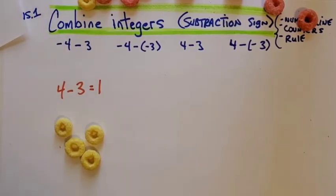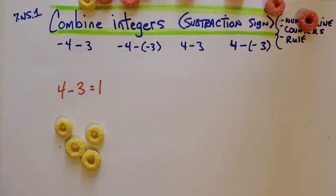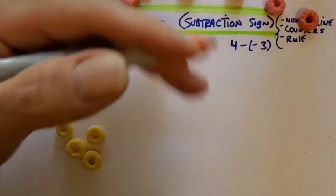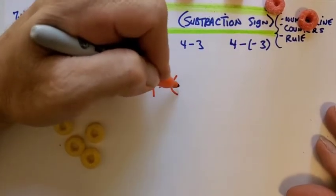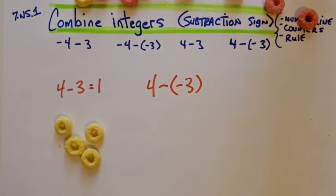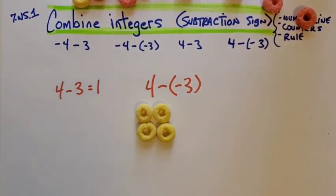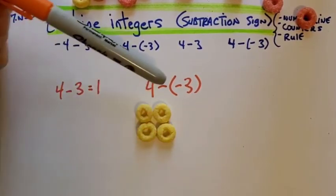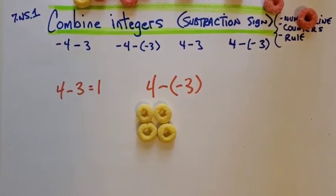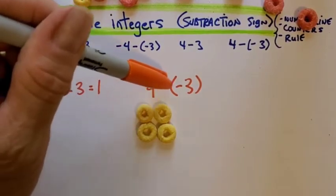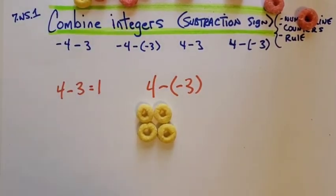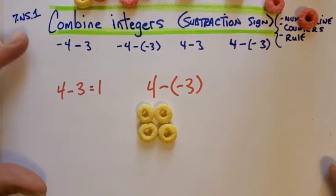Now I'm going to show you this — it's going to get a little tricky, a little confusing. Let's go with 4 minus negative 3. Here's the 4. Now, from these 4, can we remove 3 reds? No, you can't. This says you've got 4 yellows — take away 3 reds. You cannot do that.